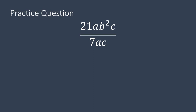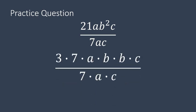When I go to simplify this, I expand it out. Make it a product of its prime factors. 3 times 7 is 21. a times b times b times c is ab squared c. And on the denominator or on the bottom of the fraction, 7 times a times c. I can now cancel out all common factors. 7 divided by 7, a divided by a, c divided by c.